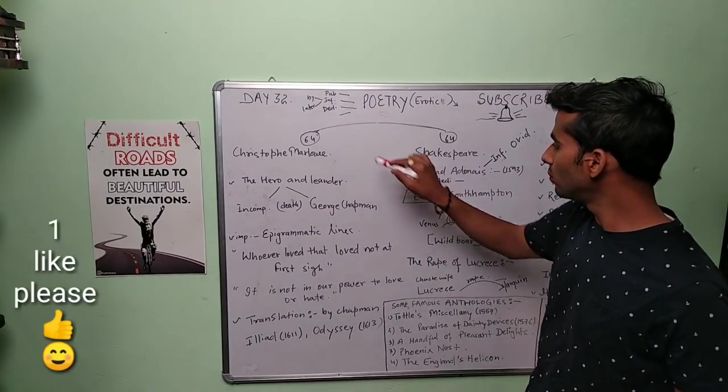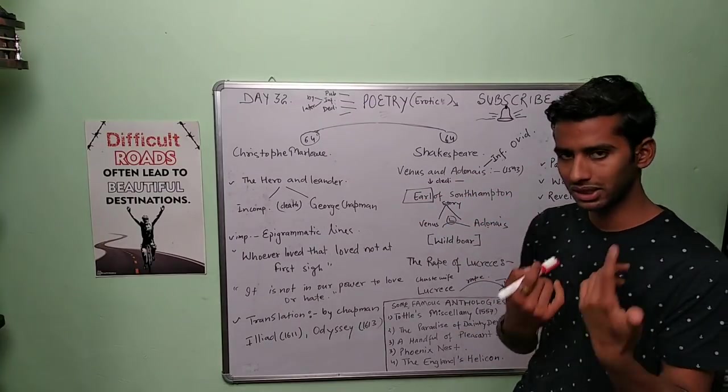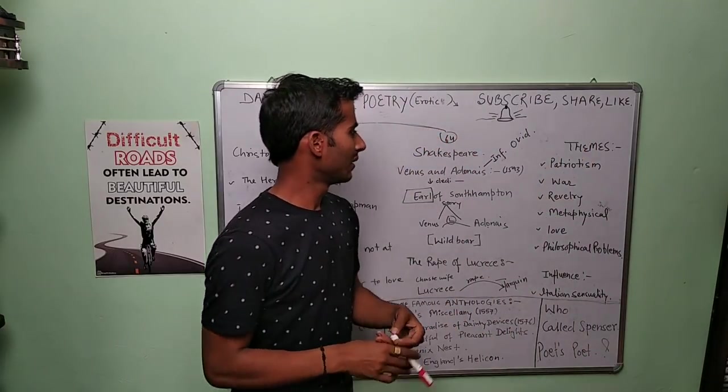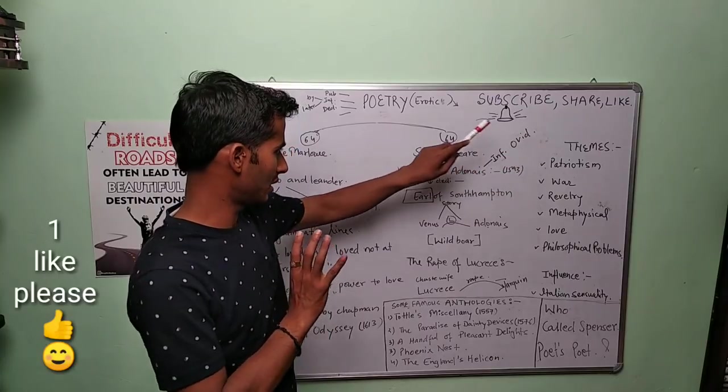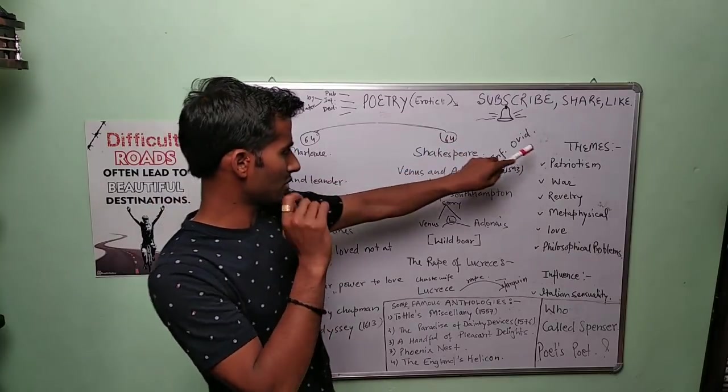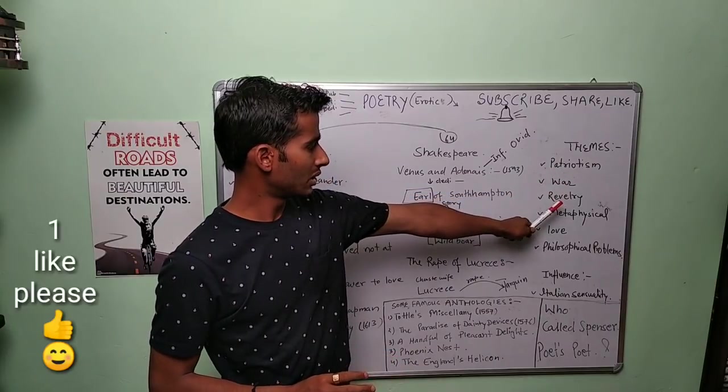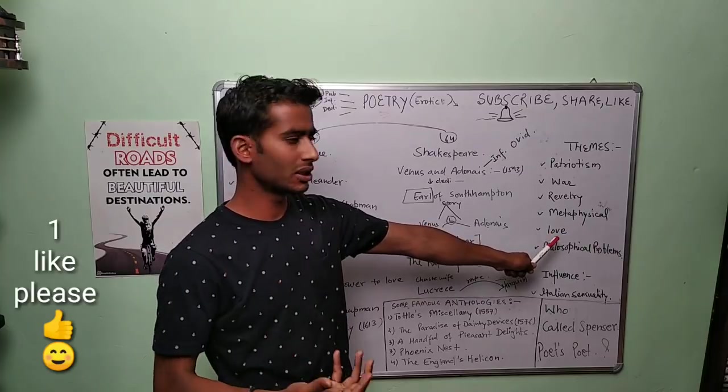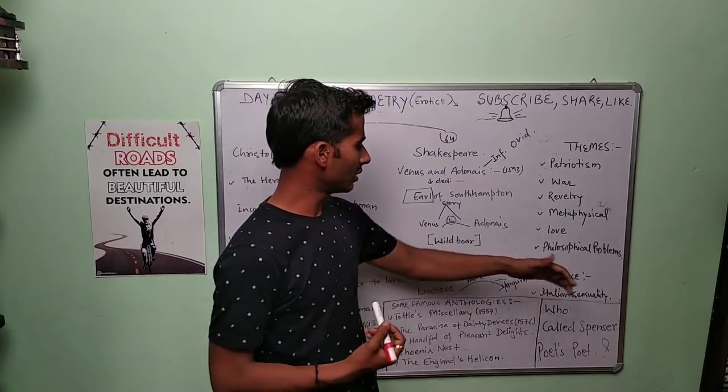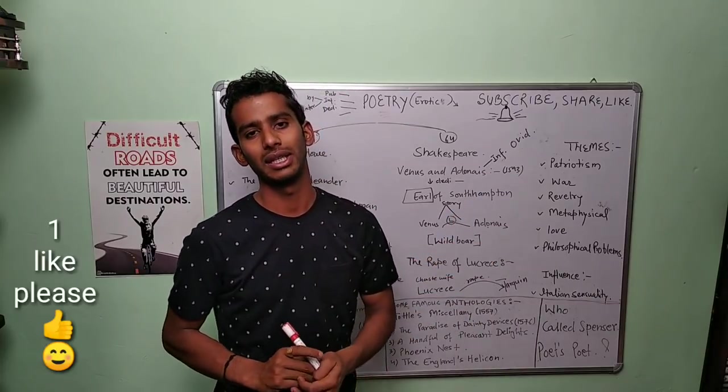Whom he dedicated to—such questions are asked in exams. The themes they were writing in that particular time in the Age of Shakespeare: Petrarchism, war, rivalry, metaphysical poetry, they used love poetry, philosophical problems.